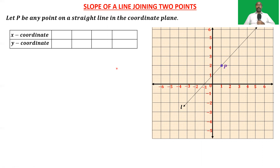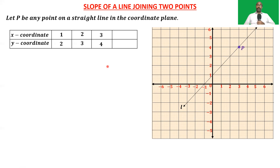The coordinates of P are 1 and 2: x-coordinate is 1 and y-coordinate is 2. Now P is moving along this line. Now the position of P is (2, 3). Enter these values in the table. Again, P is moving along the straight line and now the coordinates are (4, 5).